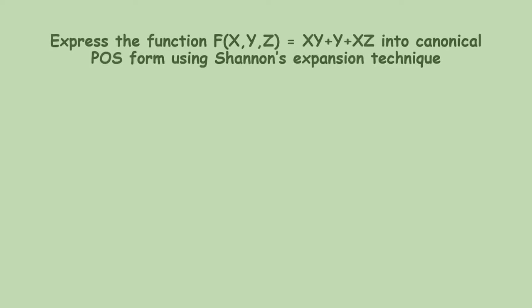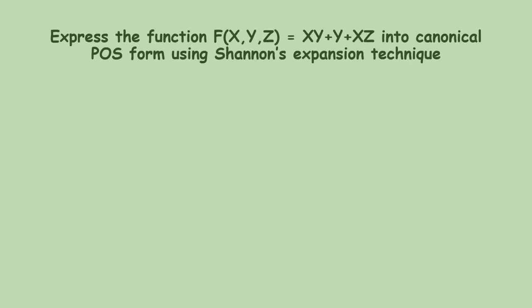Our example is: express the function f(x,y,z), which is a three-variable function equal to xy plus y plus xz, into Canonical POS form by using Shannon's Expansion Technique. By using Shannon's Expansion Technique, we can easily get a Canonical POS form from this equation.